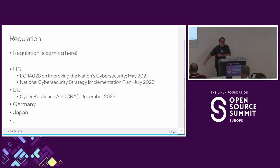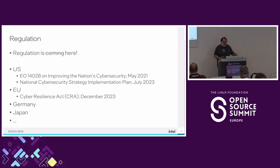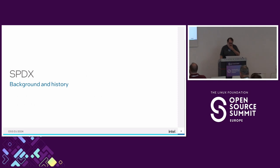We started collaborating, and at some point during all these years, regulations started coming. We used to say regulation will come, then regulation is coming — and now regulation is already here. In the US we had the Executive Order on the nation's cybersecurity three years ago. The EU has the CRA, which was voted last December and came into effect a few months ago, plus local frameworks in Germany, Japan, and elsewhere.